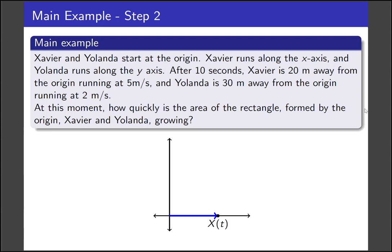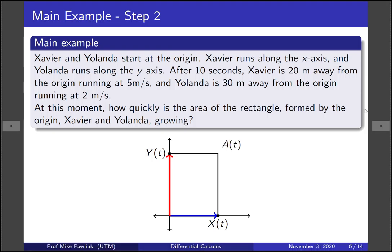Xavier is running along the x-axis, and his position depends on time. So we'll write his position as x(t), and he's running along the x-axis. What about Yolanda? She's running along the y-axis. Her position also depends on t, so we'll call this y(t). Now, how does the area of the rectangle show up here? Where is the rectangle? It's the one formed by Xavier, Yolanda, and the origin. So we can draw that in as well, and this is A(t). There's our model. We understand what exactly is happening here. Xavier is moving in the x-direction, Yolanda is moving in the y-direction, and the area of the rectangle is changing.